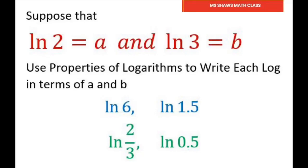Hi everyone. Suppose that ln of 2 is a and ln of 3 is b. We're going to use properties of logarithms to write each log in terms of a and b.